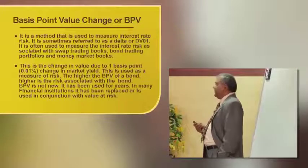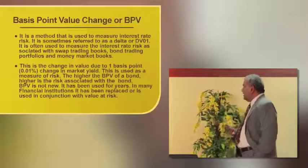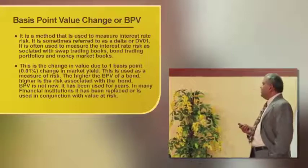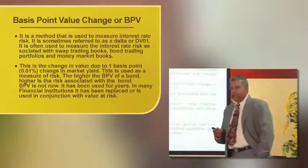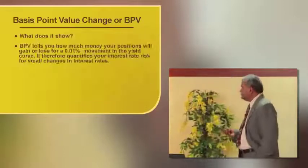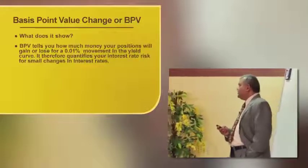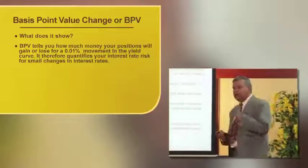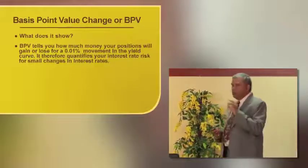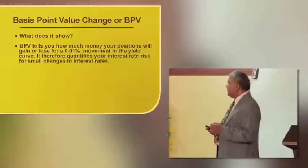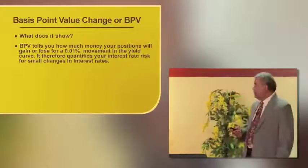BPV is not new and has been used for years. In many financial institutions it has been replaced by, or used in conjunction with, value at risk. BPV tells you how much money your position will gain or lose for a 0.01% change movement in the yield curve, thereby quantifying interest rate risk for a small change — for example, from 8.56% to 8.57%, or 8.54% to 8.53%.